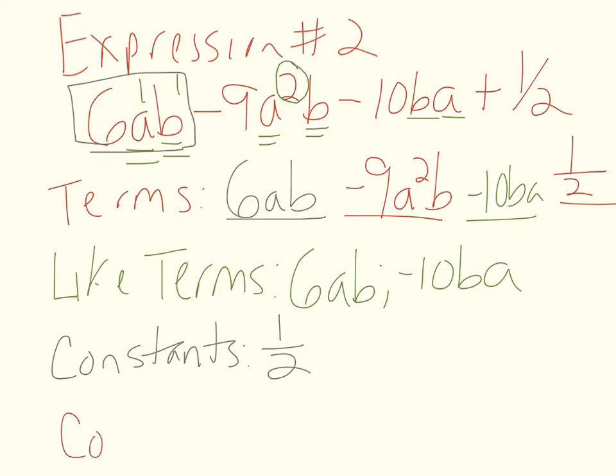And finally, we'll identify our coefficients. Coefficients must have variables. So 6ab is a variable term. The coefficient is 6. Negative 9a squared b is a variable term. Negative 9 is the coefficient. Negative 10ba is a variable term. Negative 10 is the coefficient.